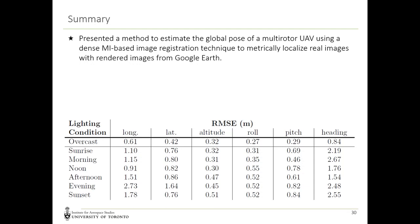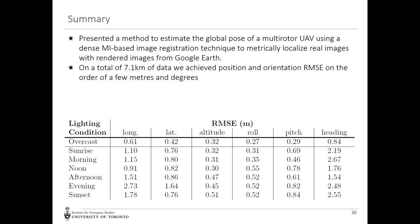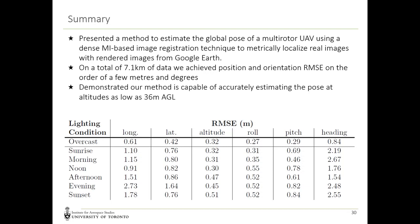In summary, we presented a method to estimate the global pose of a multirotor UAV using a dense mutual information-based image registration technique to metrically localize real images with rendered images from Google Earth. On a total of 7.1 kilometers of data, we achieved position and orientation RMS errors on the order of a few meters and degrees. We demonstrated that our method can accurately estimate pose at altitudes as low as 36 meters above ground, and showed robustness to daily lighting changes during a sunny summer day.